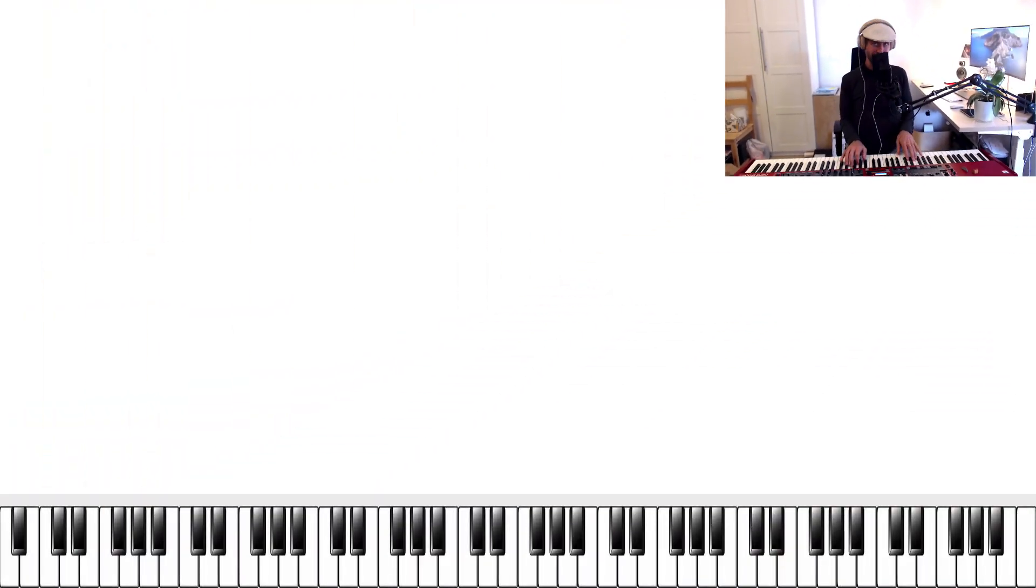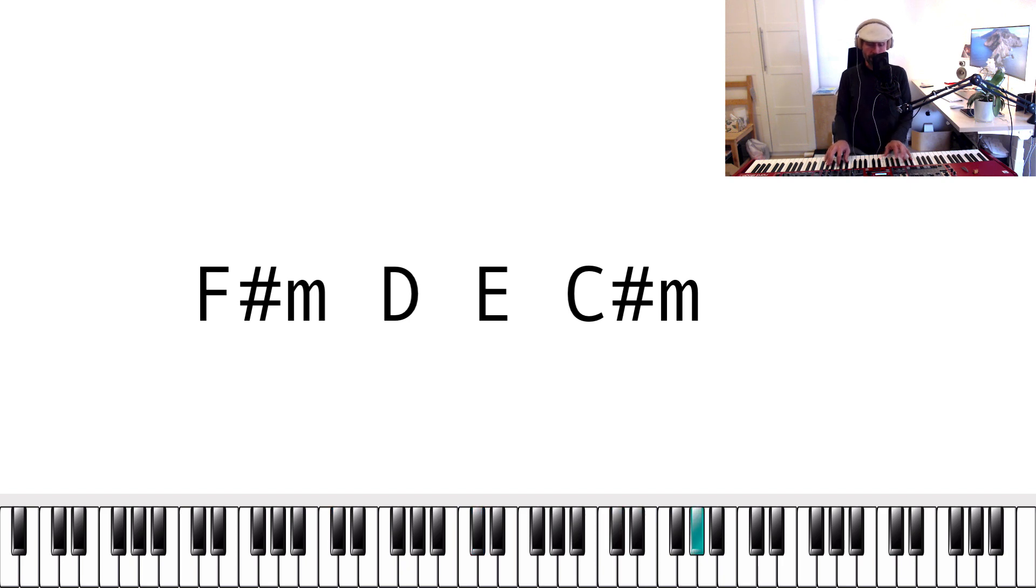So first the chords. There are only four chords here. So this is very simple. The chords are all diatonic, meaning they are all from the same key, which is F sharp minor. So the first one is the tonic, F sharp minor. Then moving to D major. Then to E major. And to C sharp minor. And then back to starting from the beginning to F sharp minor.